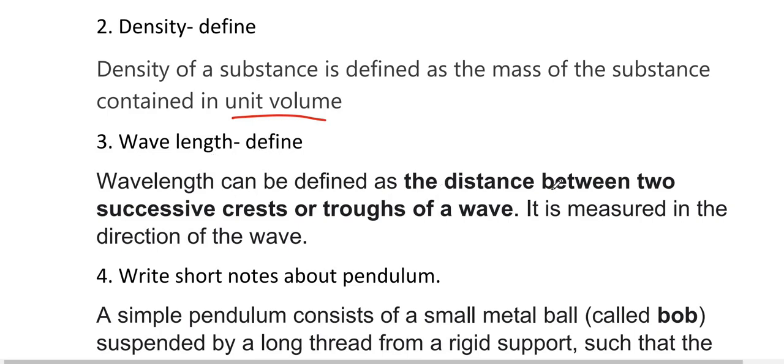Wavelength defined: Wavelength can be defined as the distance between two successive crests or troughs of a wave. It is measured in the direction of the wave.